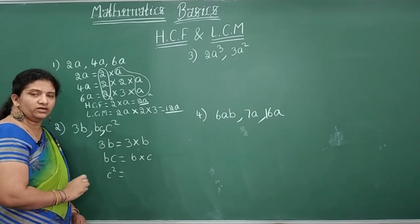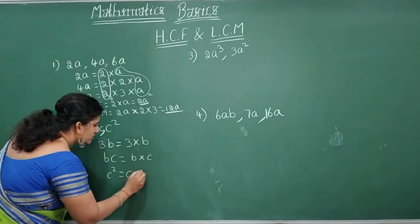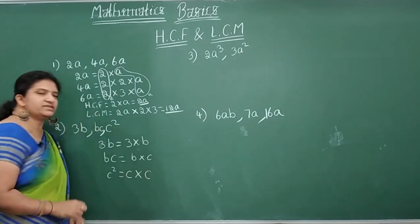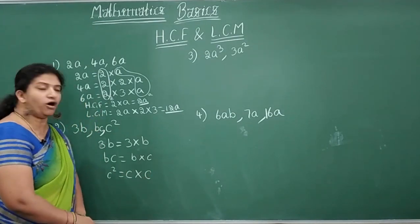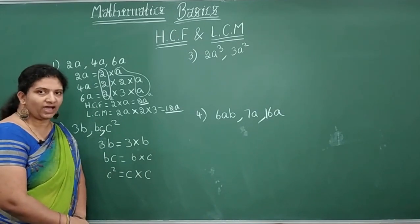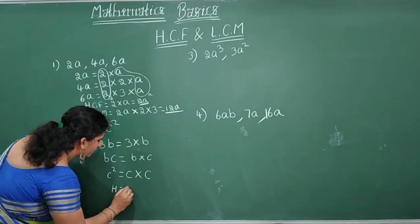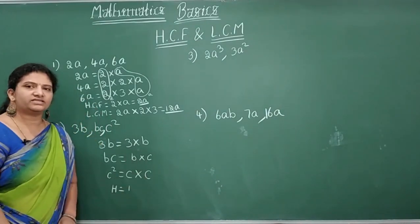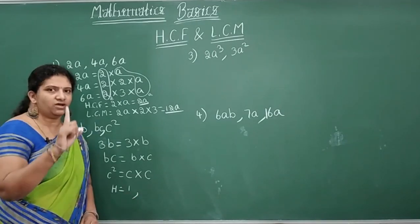C square means what? C, 2 times it is multiplied. So split that one as it is. Now look here. In all the 3, is there anything common? No, don't have anything common. So what you can say? HCF is equal to 1. HCF is equal to 1. Nothing common. So you have to write it as 1.